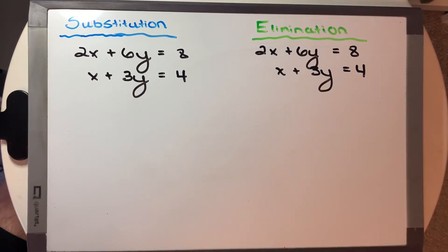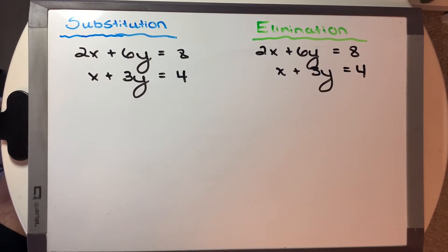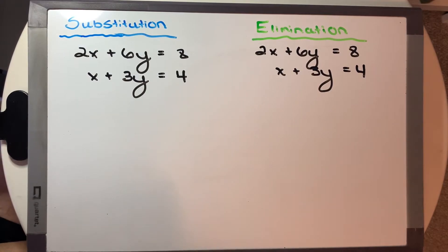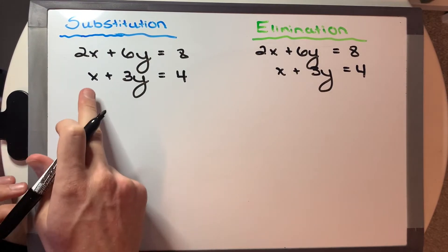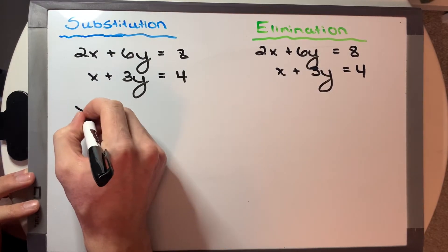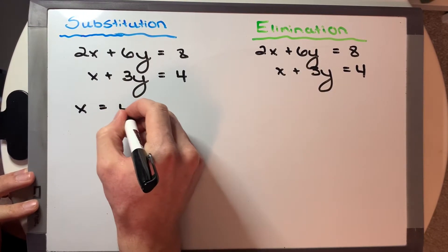Okay, and so now we have the third example. So we've seen no solution, we've seen one solution. Now let's see what we get out of this one. So starting with substitution again, let's solve for x in this case, because we have a single x here. So x is equal to 4 minus 3y.